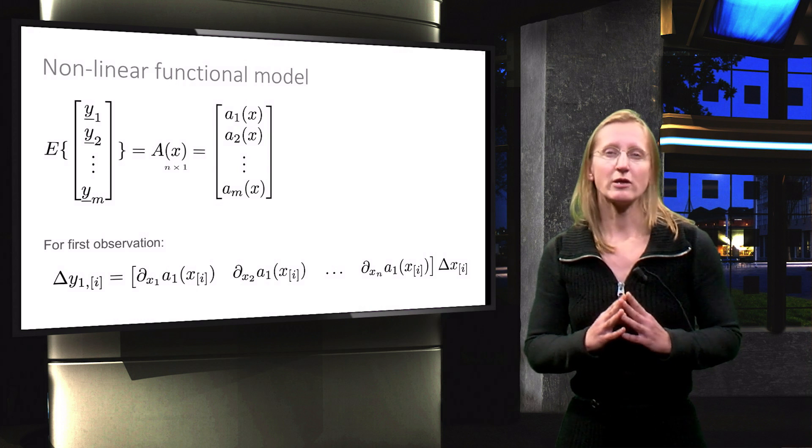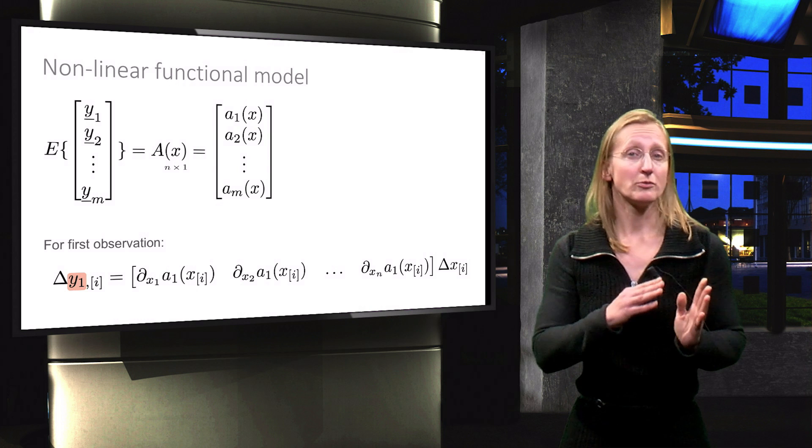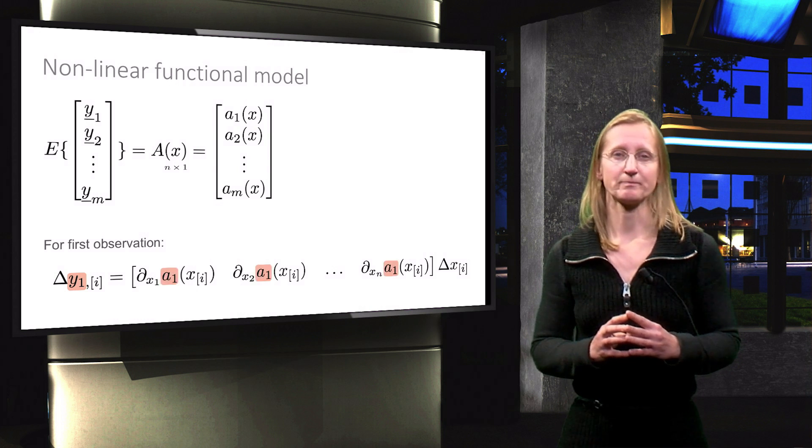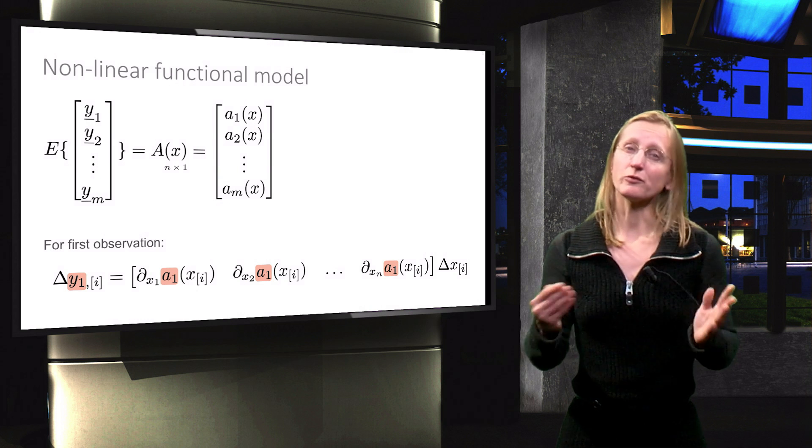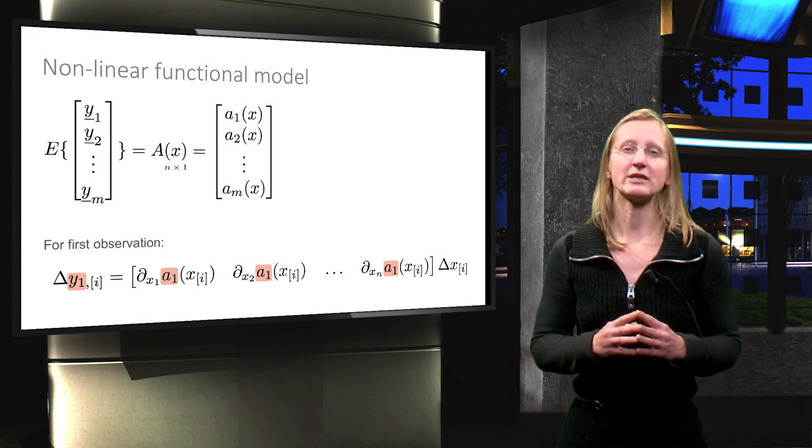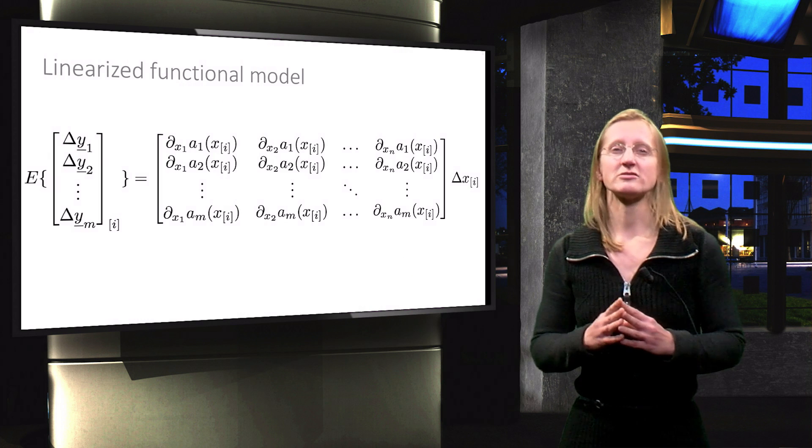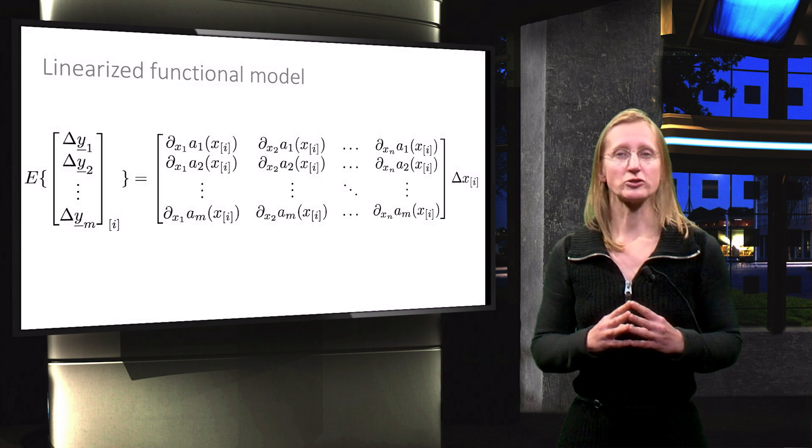And since we are looking only at the first observation, the partial derivatives of function a1 are to be considered. We can do this for all the observations such that we can set up a system of m equations. And this gives us the so-called linearized functional model.